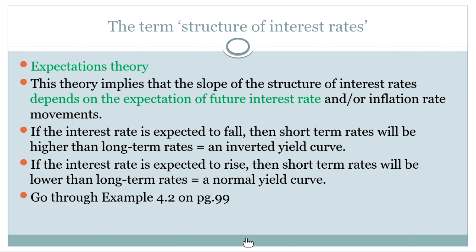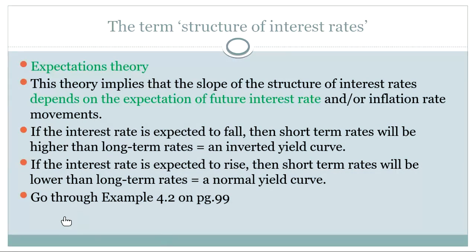Expectations theory implies that the slope of the structure of interest rates will depend on expectations of what the future interest rate or inflation rate movement is going to do. So if we expect interest rates to fall, short-term rates are going to be higher than long-term rates and we will have an inverted yield curve. If the expectation is that interest rates are going to rise, short-term rates will be low and long-term rates higher, resulting in the normal yield curve we saw on page 98.